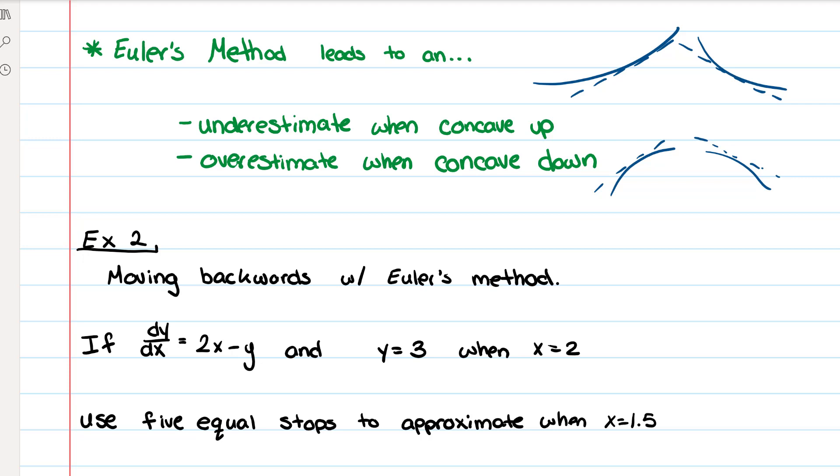Alright, so example two, we're going to talk about how to use Euler's method if you want to go backwards. And what I mean by that is we're going to start with x equals 2 and we're going to get to x equals 1.5.